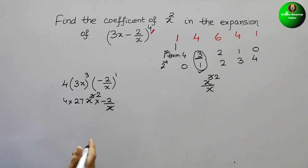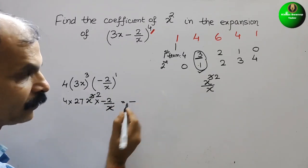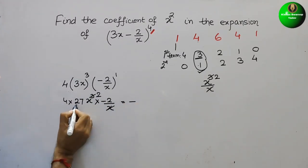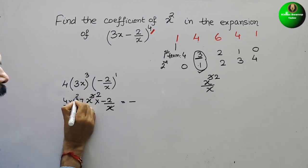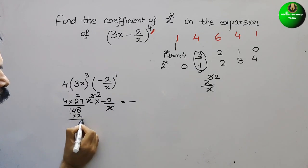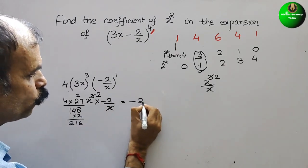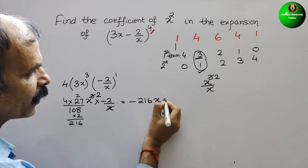Just multiply now. Here minus is there, we will put minus here. Next, 27 into 4 is 108. 108 into 2, we will get 216. Therefore, it is minus 216x².